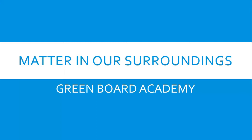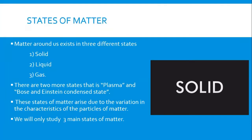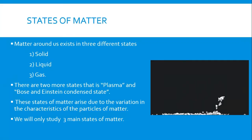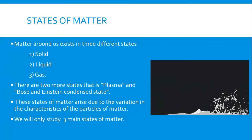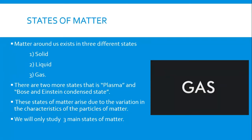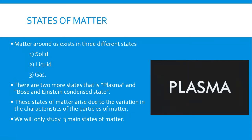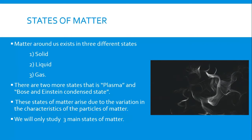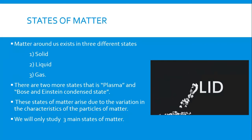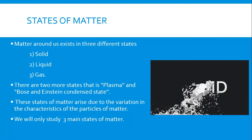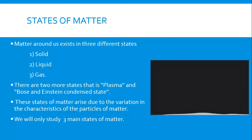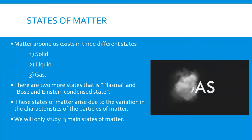The matter around us exists in mainly three states: solid, liquid, and gaseous. But there are two more states not listed in your book — plasma and the recently discovered Bose-Einstein condensate. These are very important new states of matter.